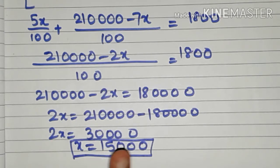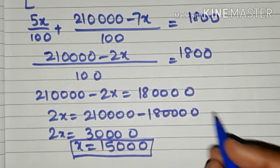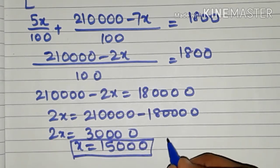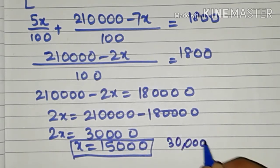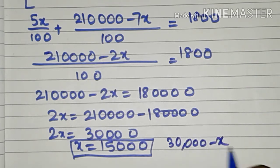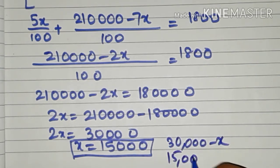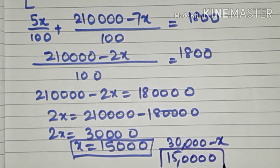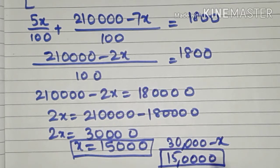So we have invested 15,000 in the first bond — the 5% interest bond. The investment in the second bond is 30,000 minus x, which is 30,000 minus 15,000, again 15,000. So in this case the amount is divided equally: 15,000 in the first bond and 15,000 in the second bond.